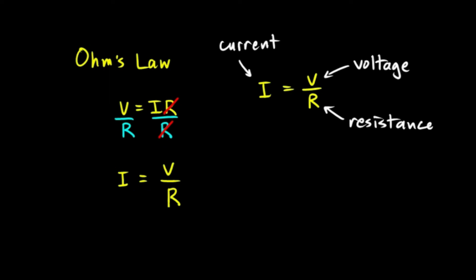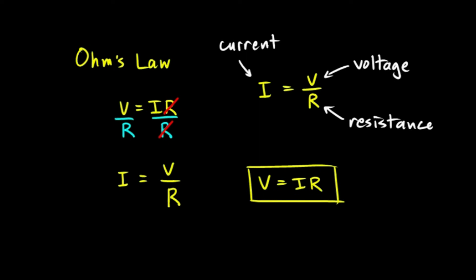Ohm's Law — I equals V over R, but more commonly written as V equals IR. We'll come back next and do some simple example problems with this equation.